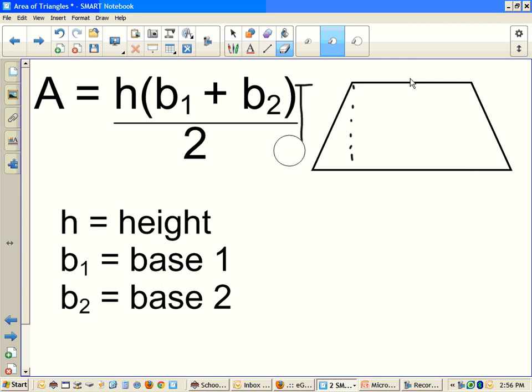But any of those would be the height of our trapezoid labeled with an h. Base 1, even though it says Base 1, this is the top. And then Base 2 down here. All you do is plug it in, follow PEMDAS, and solve.